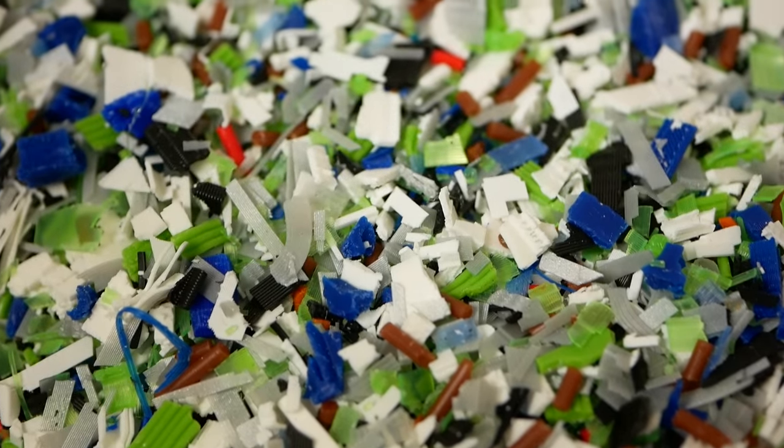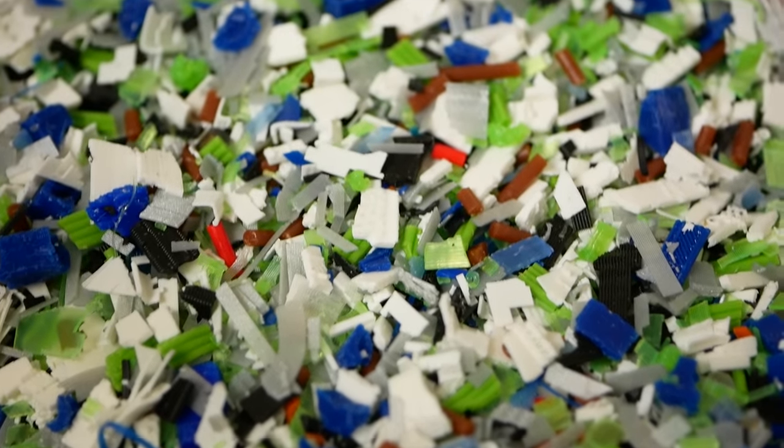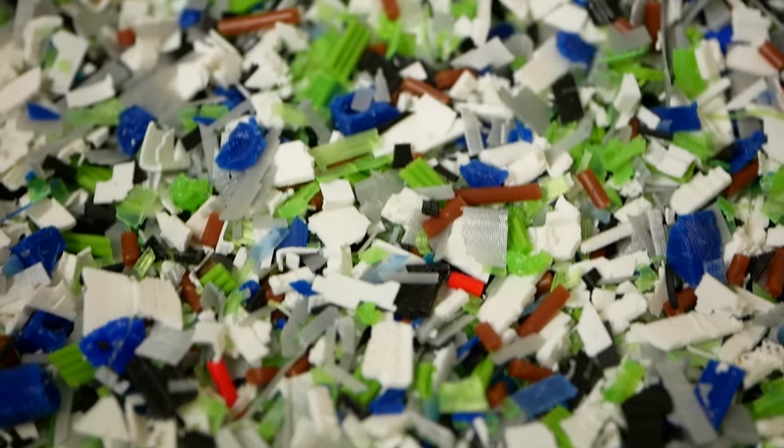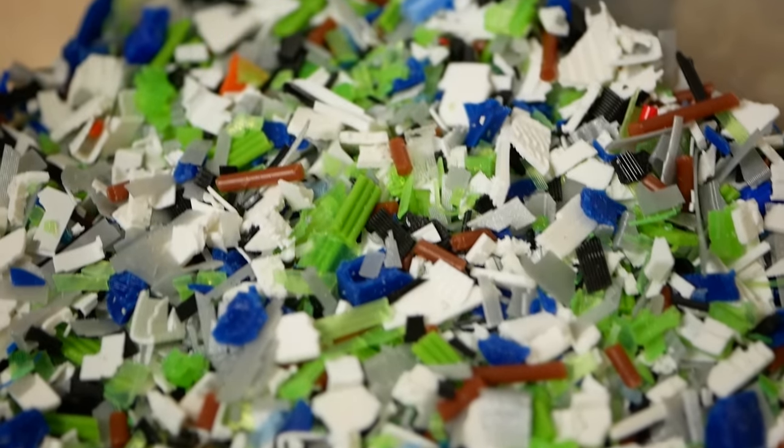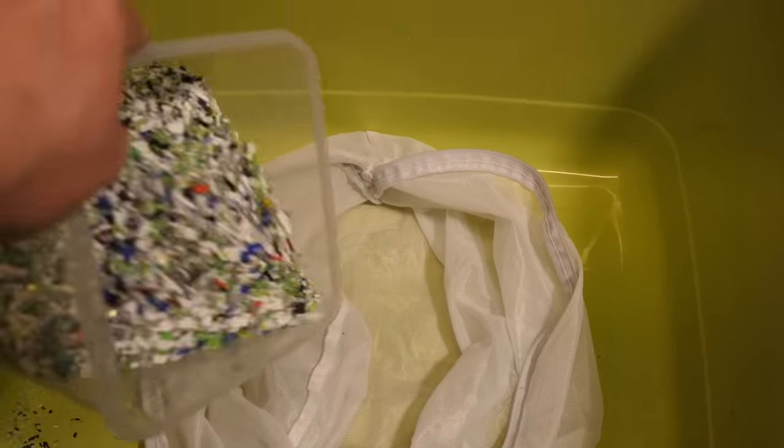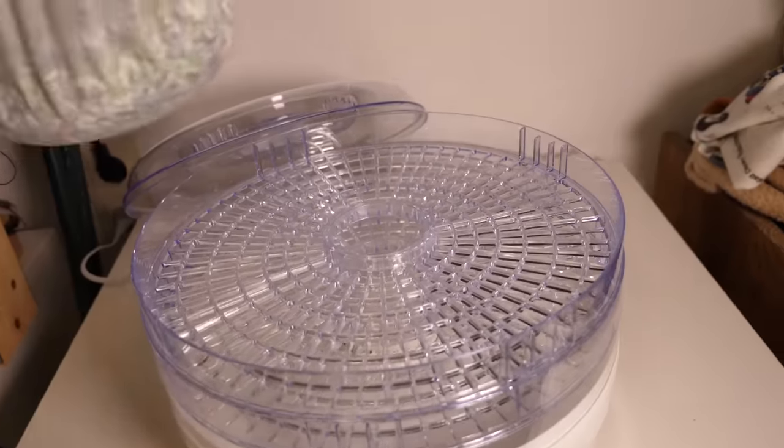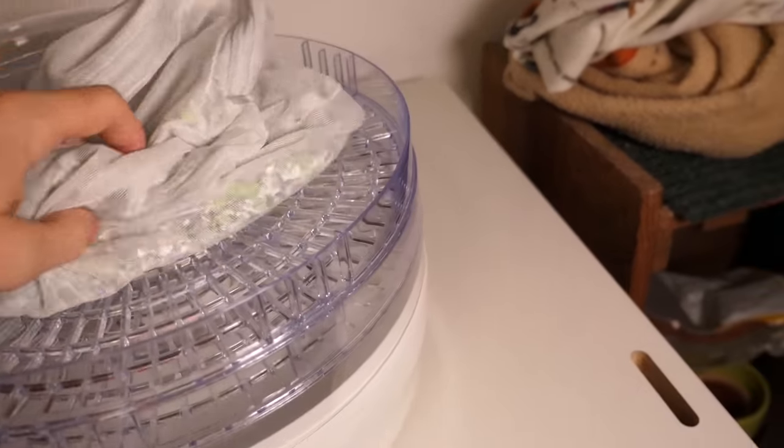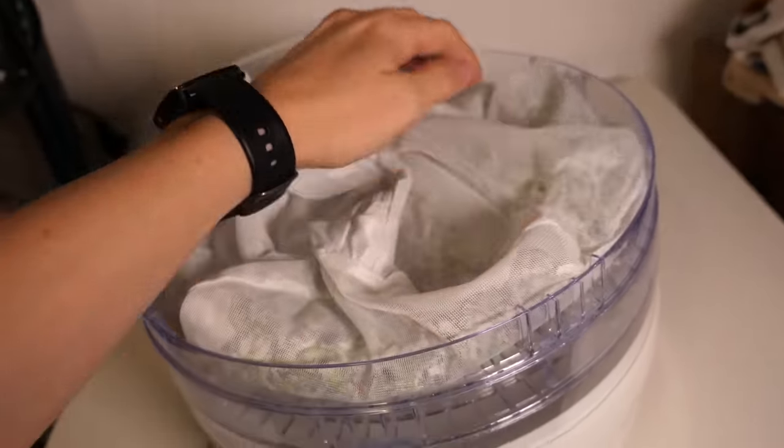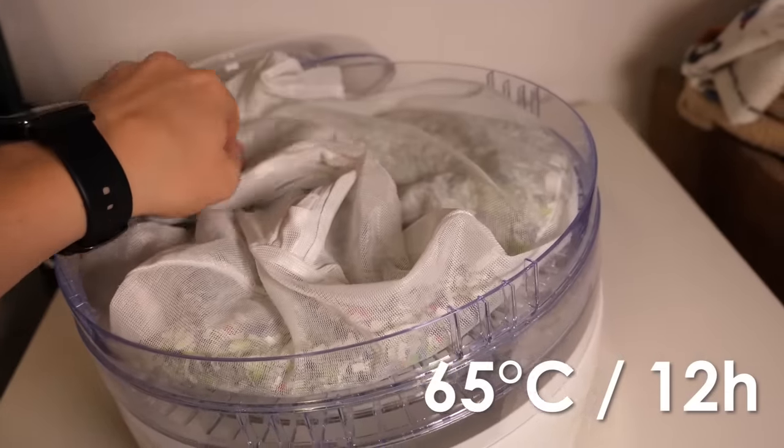The remaining particles are now basically usable, the only thing that just needs to be done is to properly dry them because otherwise we'll get extrusion issues. I simply put my shreddings into a laundry bag and put everything in my food dehydrator that I also use to dry my filaments at 65°C for a night.